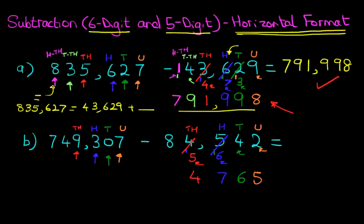We keep going onto the 10-thousands. We've got 8 ten-thousands. Our target is to get to 4. So what number after 8 has 4 as the units? The answer is 14. So what number added to 8 is going to give us 14? The answer is 6. 8 plus 6 is 14, and we are carrying 1 across.